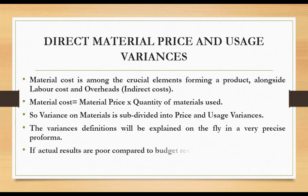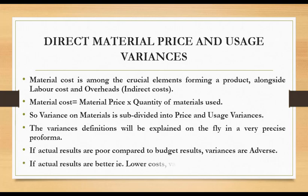If actual results are poor compared to budget results, the variances are adverse — meaning if we incur much higher costs than the budget or expected costs. But if actual results are better, meaning having lower costs than the budget, the variances will be favorable.